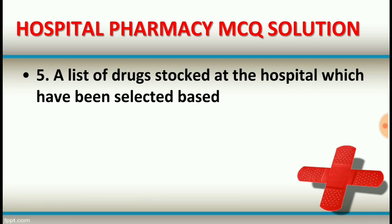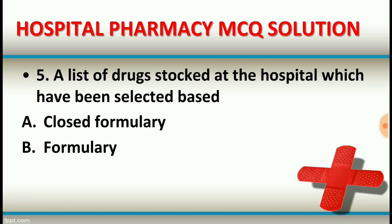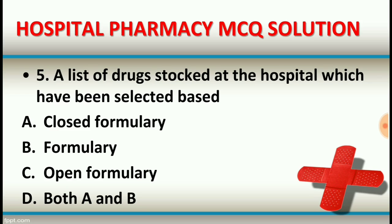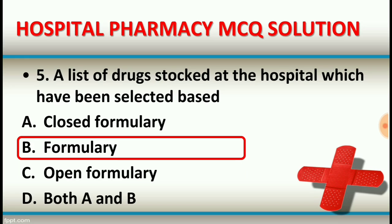Question number five: A list of drugs stocked at the hospital which have been selected based on formulary. Formulary means the list of drugs. Hospital formulary is the listed drugs at the hospital that have been selected for use.